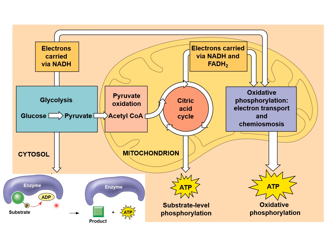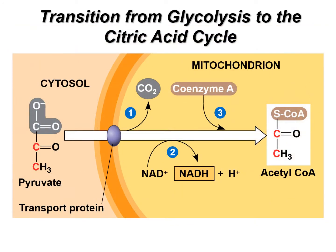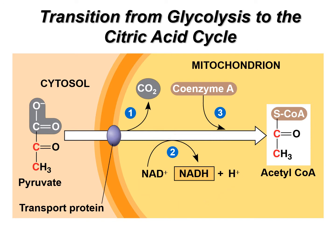Substrate level phosphorylation — can you explain it and give an example or two? Although we've talked about this before, it's always good to review it. This three-carbon pyruvate: we remove the carboxyl group, which comes off as CO2, using a transport protein. We link CoA onto the remaining acetyl group. In the process of doing that, we harvest a few electrons, making NADH which moves on to electron transport. We add that CoA, which facilitates the transfer of the acetyl group onto oxaloacetate.